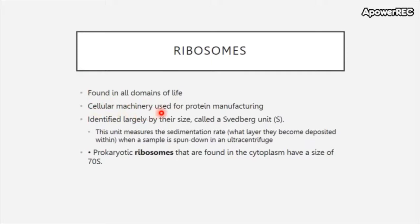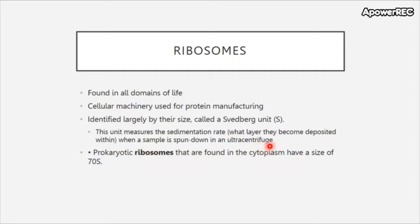Ribosomes are mostly identified by their size, measured in Svedberg units. What the Svedberg unit actually measures is the sedimentation rate — what layer becomes deposited within a sample spun down in an ultracentrifuge, which is a machine that spins very rapidly in circles. Things that are heavier than the solution will sink to the bottom, so the heavier it is the deeper in the layer it will be. Prokaryotic ribosomes found in the cytoplasm have a size of 70S — this is a factoid you will need to memorize.